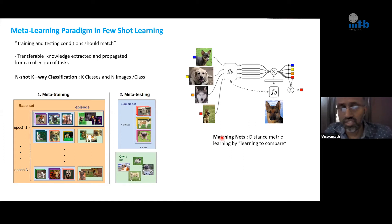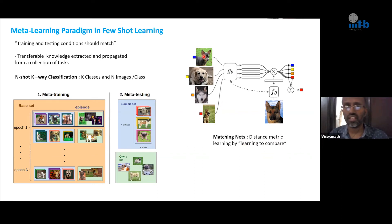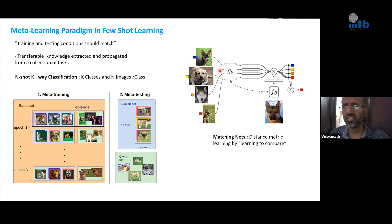One of the most popular works that started under this setting is Matching Nets. In Matching Nets, we are learning a distance metric by learning to compare. The setting is: we have four classes, one image per class as the support set, and a query image. We want to know which of the four breeds this dog matches. A neural network is designed to convert input data to embeddings — four different embeddings for the support set images — and the query image is also embedded. The nearest image is considered as the class.